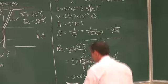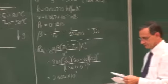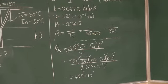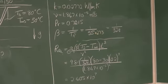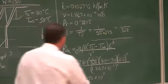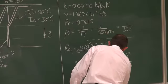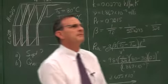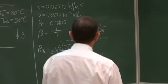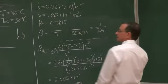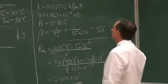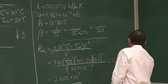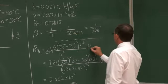The result is a Rayleigh number of 2.405×10⁷. Multiplied by the Prandtl number 0.7215 — so the Rayleigh number is 2.405×10⁷.